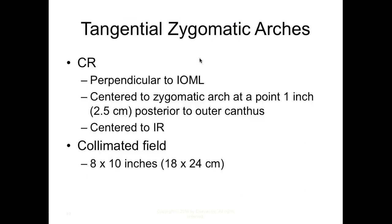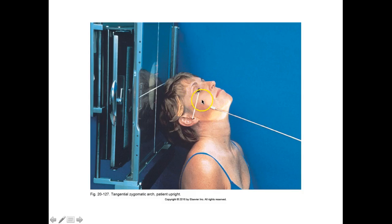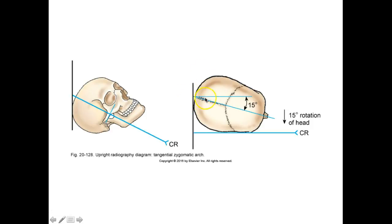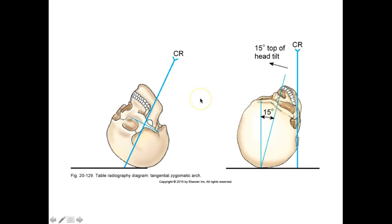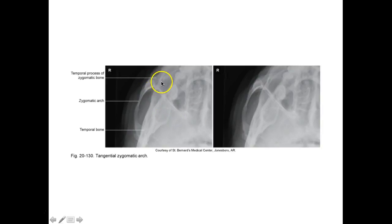So to summarize the tangential: MSP 15 degrees toward the side of interest, top of the head 15 degrees away from side of interest — this combination opens up the arch. Center at the zygomatic arch, 1 inch posterior to the outer canthus. The resulting image shows the temporal process of the zygomatic bone and the zygomatic arch with the temporal process clearly — a great jug handle. That is your goal: see if there are any fractures within the arch.